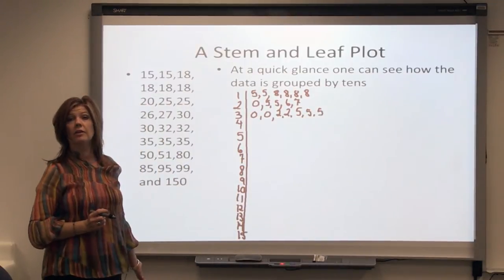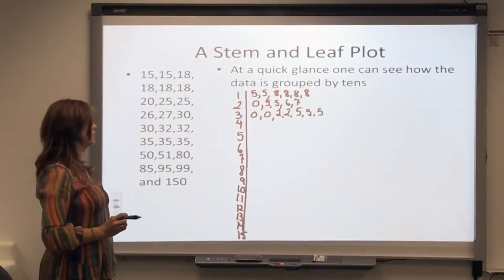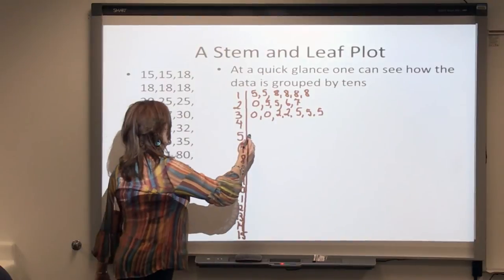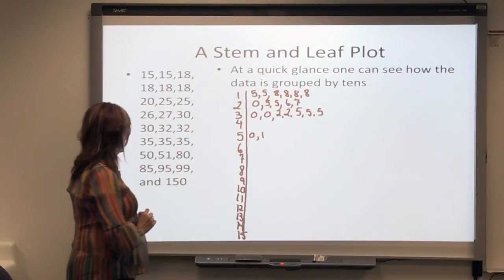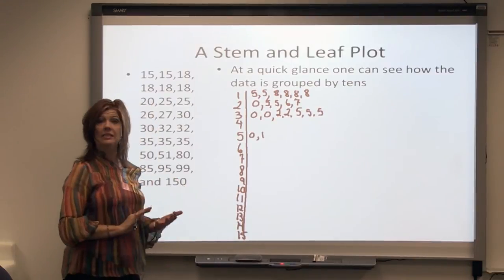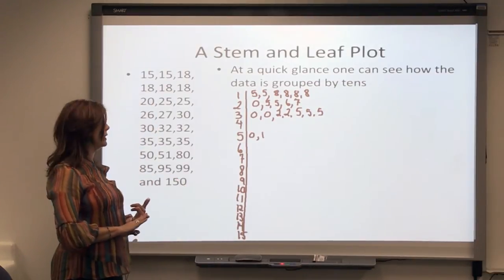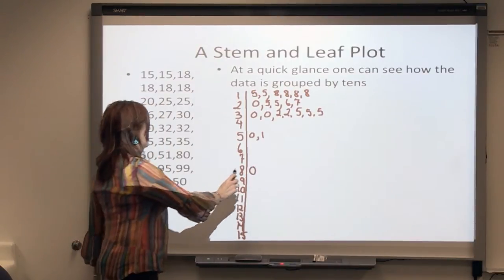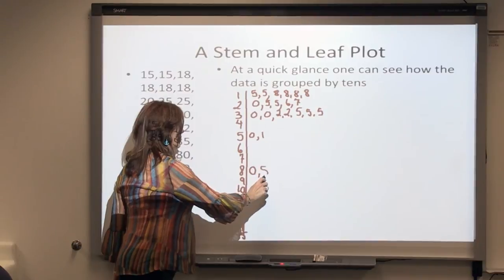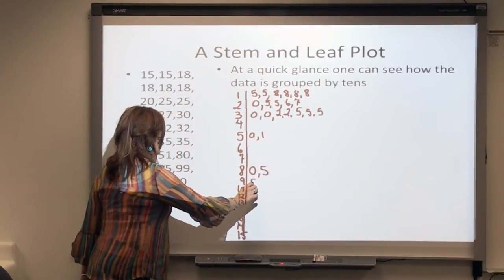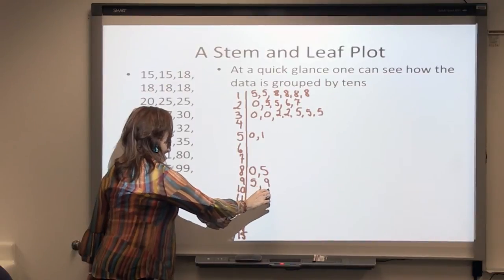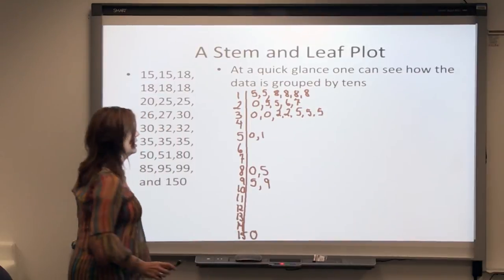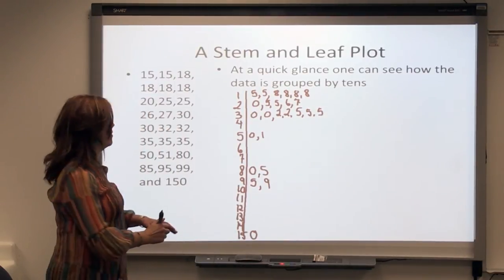There's nobody who makes in the forties, so I'm not going to put any leaves for that stem. I have someone who makes $50,000, someone who makes $51,000. Nobody makes in the sixties or the seventies. In the eighties, we have someone who makes $80,000 and someone who makes $85,000. Someone who makes $95,000, someone who makes $99,000. And then we skip all the way to $150,000.